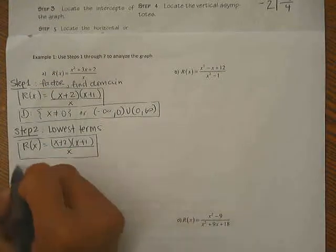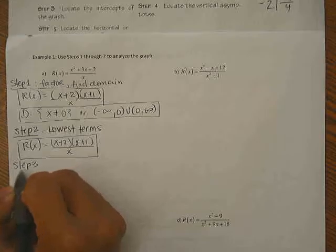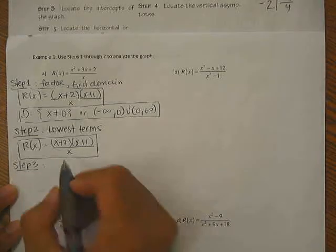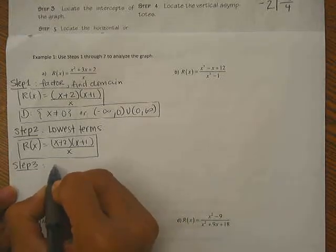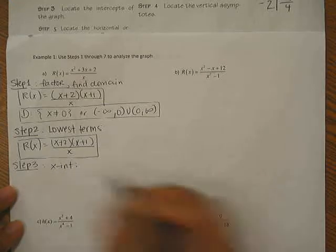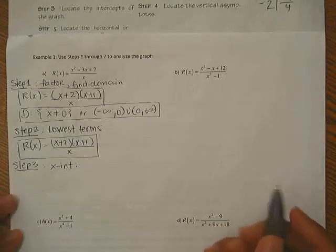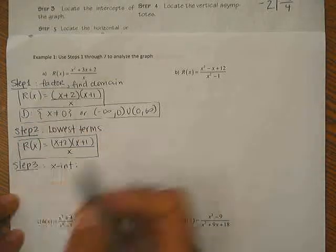Step 3: locate the intercepts of the graph. That means x and y intercept. So let's do x intercept first. X intercept is when y equals to 0, so what we're going to do is set r of x equals to 0.